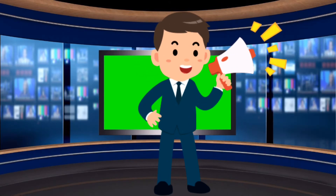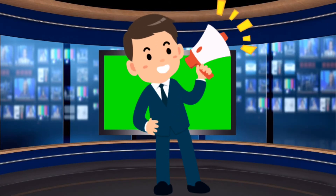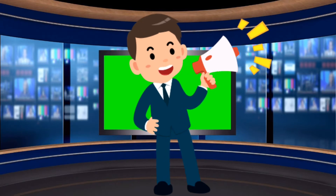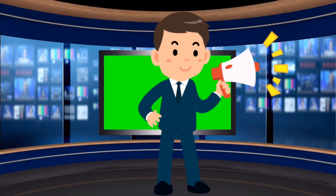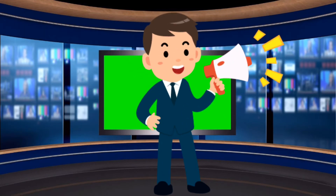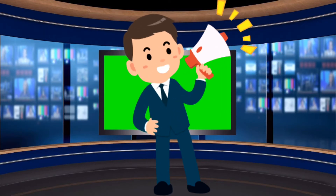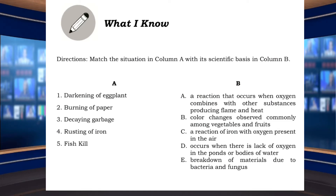In this module, you'll be able to investigate the changes that happen in materials under two conditions: presence of oxygen and lack of oxygen. Open your module on page 1 for 'What I Know.' Match the situation in Column A with the scientific basis in Column B. Write only your answer in your answer sheet. You only have five seconds to answer this activity.